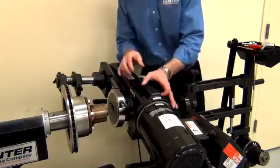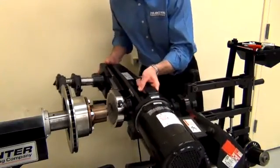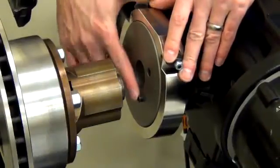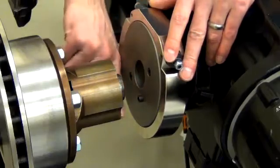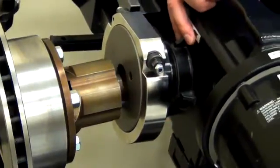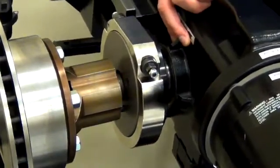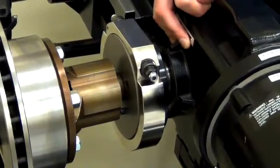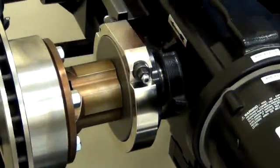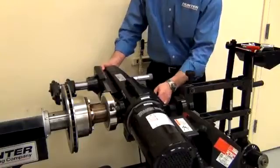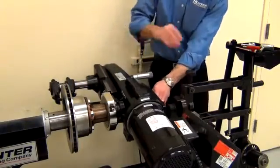First thing we do is mount the lathe to the vehicle just as we did before. We have to line up the screw with the hole on the adapter, drop it in place, pull up our draw bar, spin it hand tight, same as before.